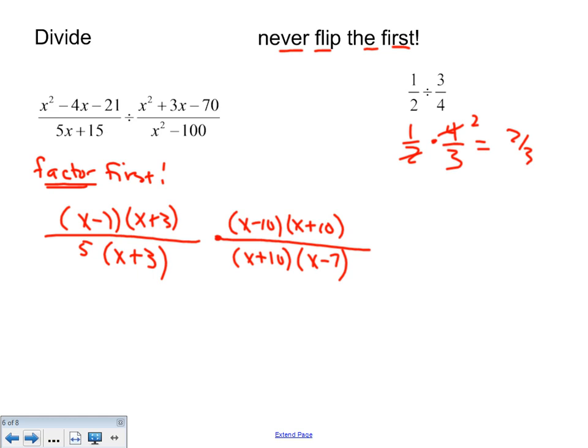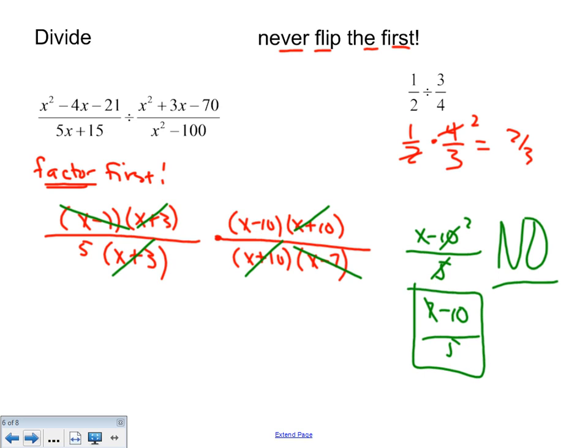Now let's look for things that can cancel. x plus 10s are gone. x plus 3s, which we mentioned, would be gone. I'm left with an x minus 7 way over here, which goes with this x minus 7 way on the bottom. Kitty corner diagonally we can go. And the only thing I'm left with is an x minus 10 on the top and on the bottom is a 5. And again, please, please, do not take the 5 and the 10 and put a 2. No. Don't do that. Your answer is x minus 10 over 5. That 10 is part of the quantity of x minus 10. Cannot take part of a quantity.